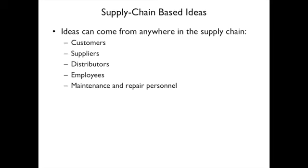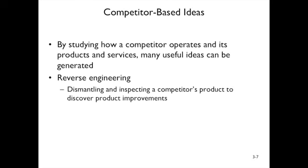Where do you get ideas for new products? Ideas can come from the supply chain — customers, suppliers, distributors, and employees. Maintenance and repair people are especially valuable because they see what's coming back and what's breaking. One idea might be to reduce maintenance by upgrading the part that needs repair most often. Competitor-based ideas also arise when a competitor launches new products or services.